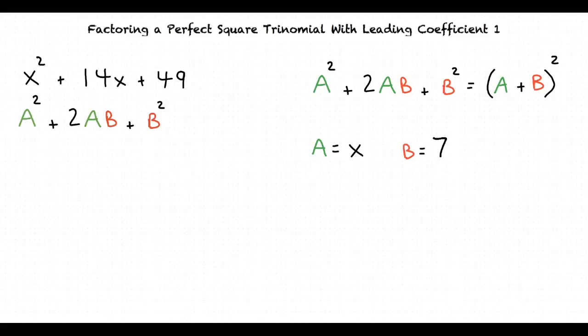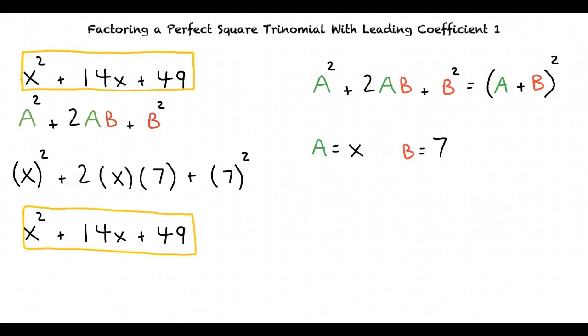Now we can substitute in our a and b values to see if our expressions match up. When a equals x and b equals 7, the result is x squared plus 2 times x times 7 plus 7 squared. x to the second power equals x squared, 2 times x times 7 equals 14x, and 7 squared equals 49. After simplifying further, we find that our two expressions do match up.